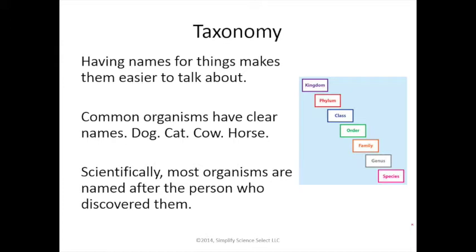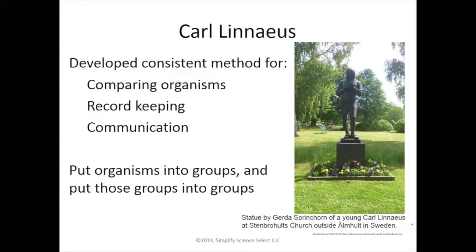Generally the person who discovered it got the chance to name it. The man who came up with this whole system was a Swedish professor in the 1700s named Carl Linnaeus, and because of that we call this the Linnaean system. You know you're really successful when someone uses your name as an adjective. He developed a consistent method for comparing organisms, keeping records about them, and communicating about them — giving them names, putting them into groups, and putting those groups into larger groups so everything was highly organized and clear.